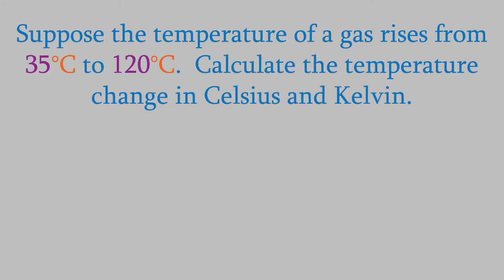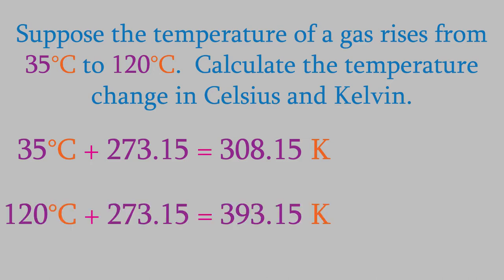For example, suppose we change the temperature of a gas from 35 degrees Celsius to 120 degrees. That gives us a temperature change of 85 degrees. And now let's try that again in Kelvin. Our beginning temperature was 35 degrees Celsius, which is 308.15 Kelvin. Meanwhile, our final temperature was 120 degrees Celsius, and that's 393.15 Kelvin. If we take the difference, you can see that what we get is 85 Kelvin. That's the same as the temperature change we got in Celsius.